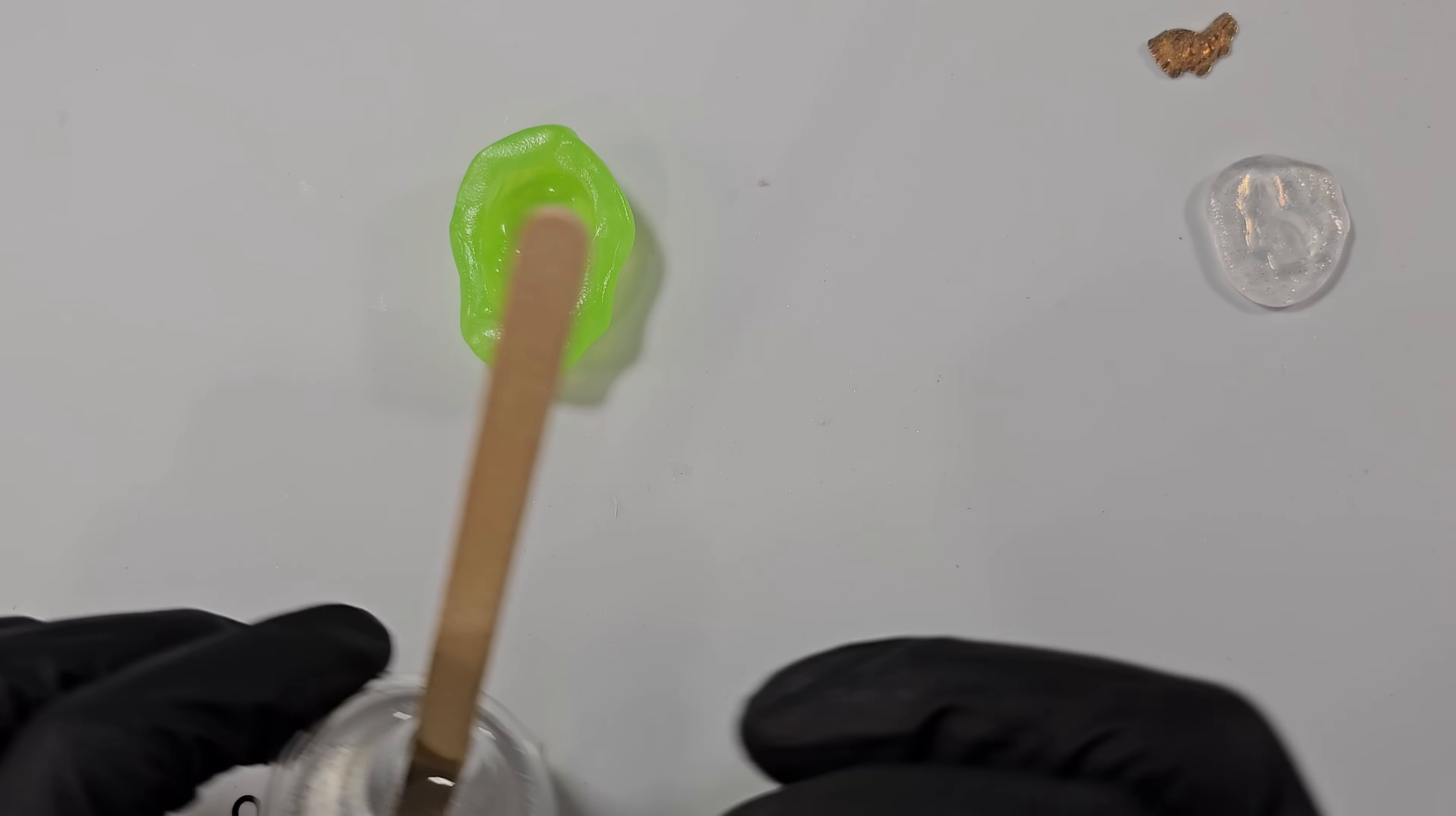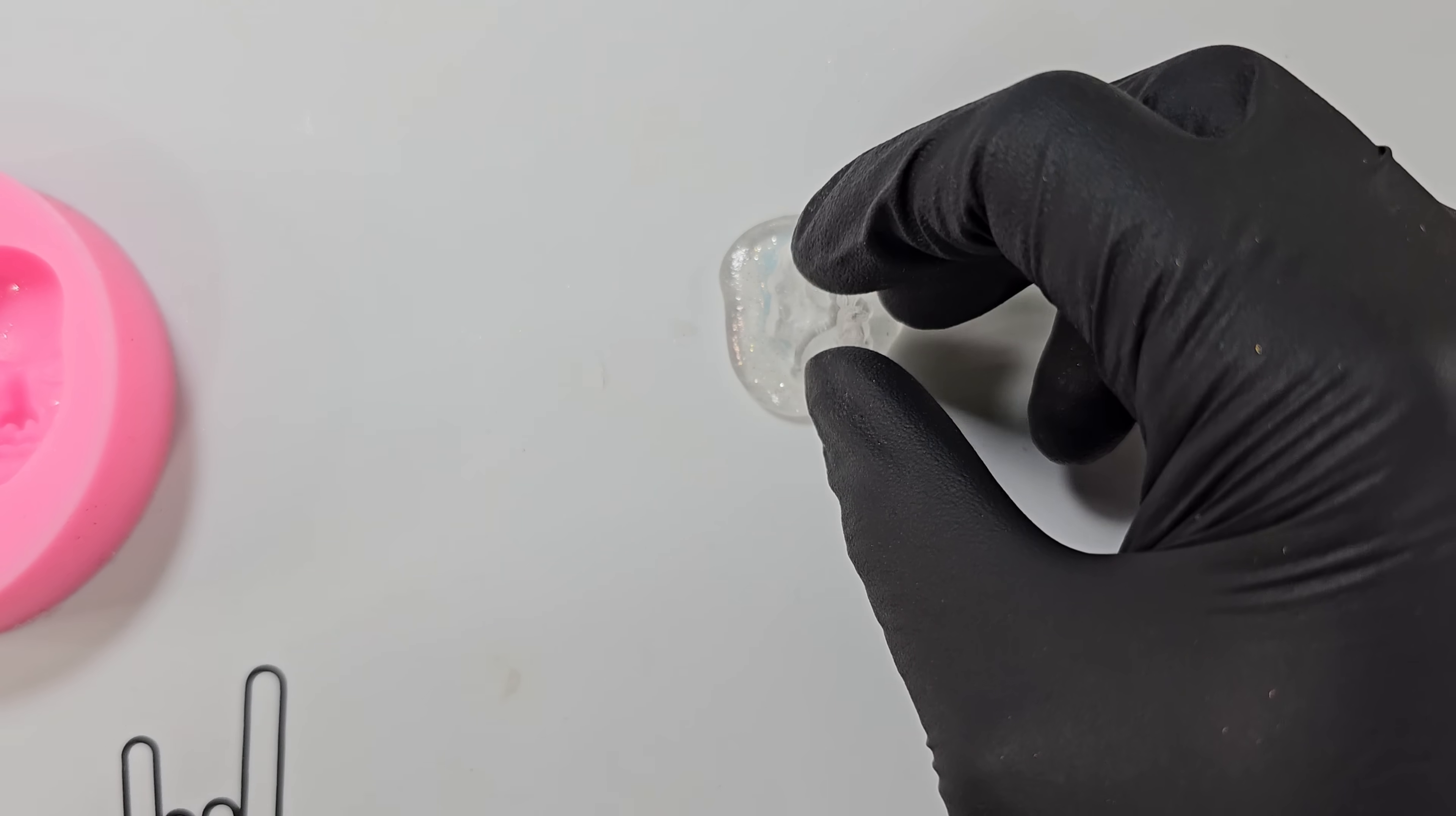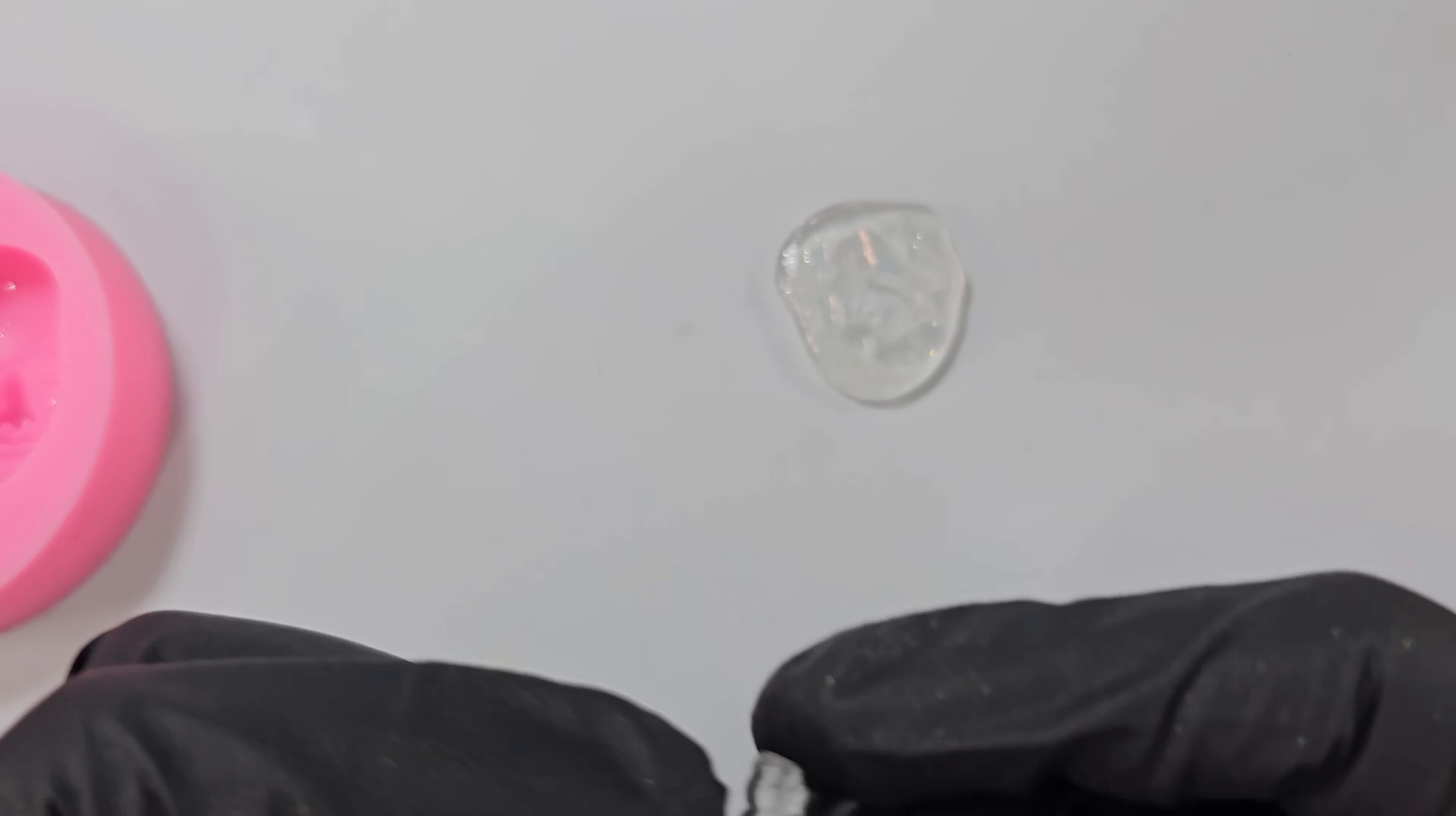My resin has been sitting to degas. I'm not really that fussed about the bubbles. Just going to pour that in and wait for it to cure. Just out of interest, I use the same mold again for the little rabbit, but I just used clear, and it still kept the detail. And I could use that again. This stuff's amazing.